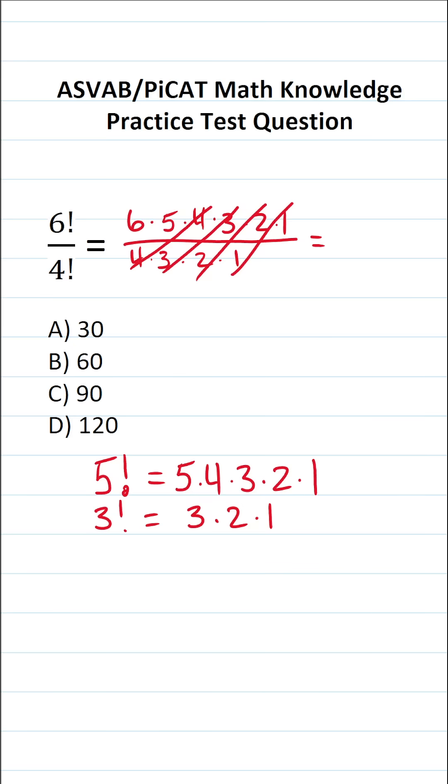In doing so, that leaves us with 6 times 5. 6 times 5 is 30, of course. So the answer to this one is A, 30.